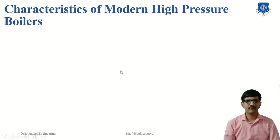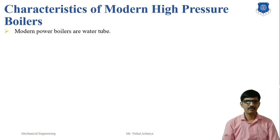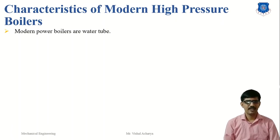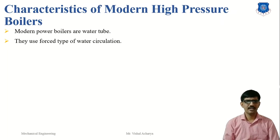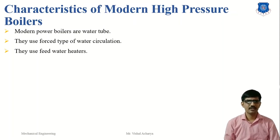We will discuss the characteristics of the modern high pressure boiler. Modern power boilers are the water tube boiler. Here pressure range is critical pressure range and they have a forced type of water circulation. The inner tube pressure is higher than the natural circulation. This type of boiler uses the feed water heater.